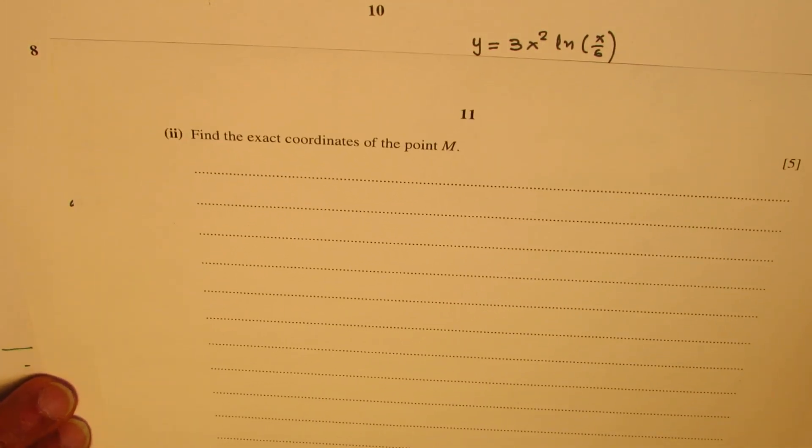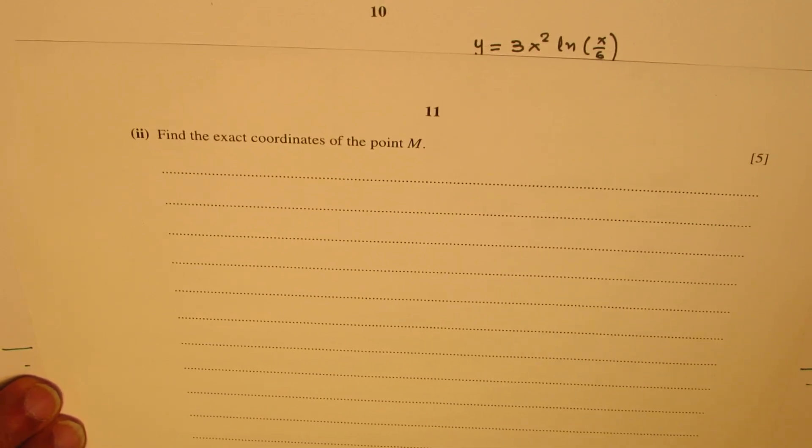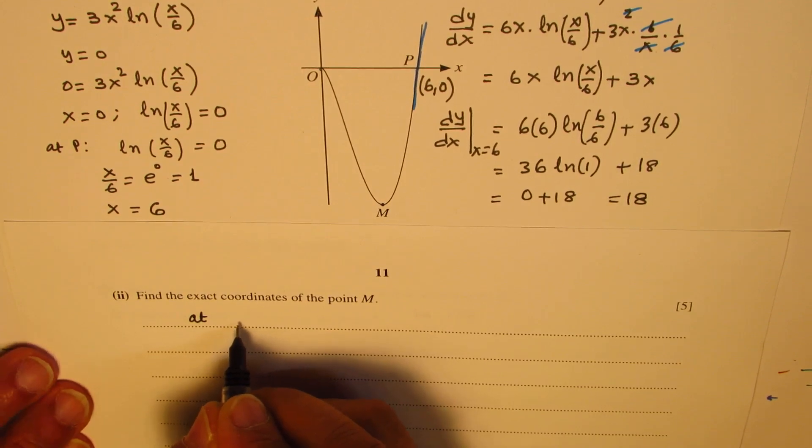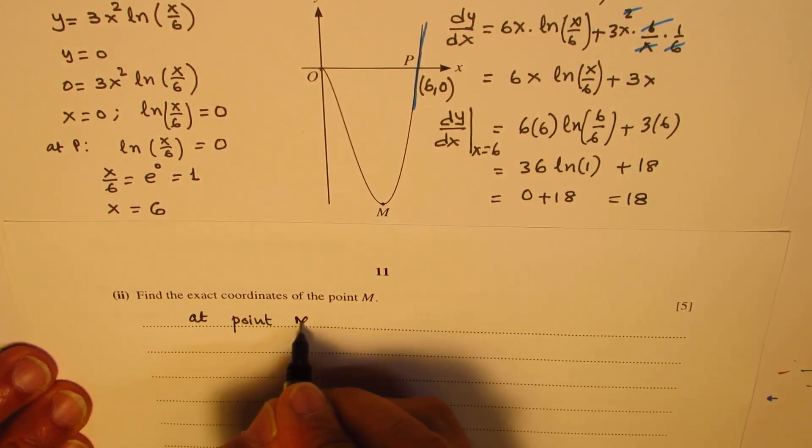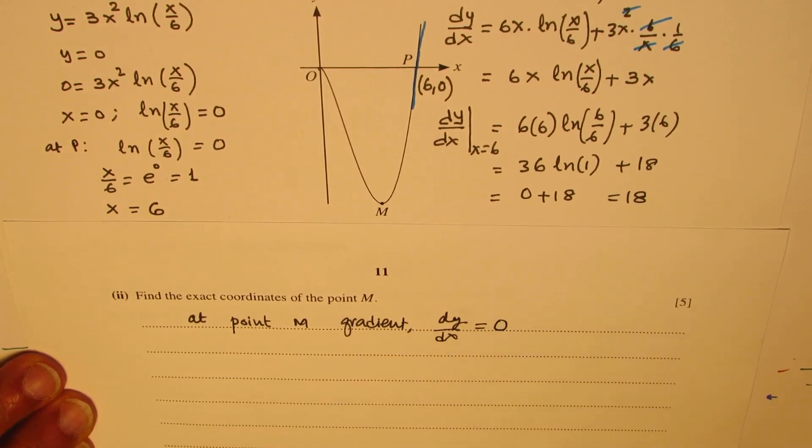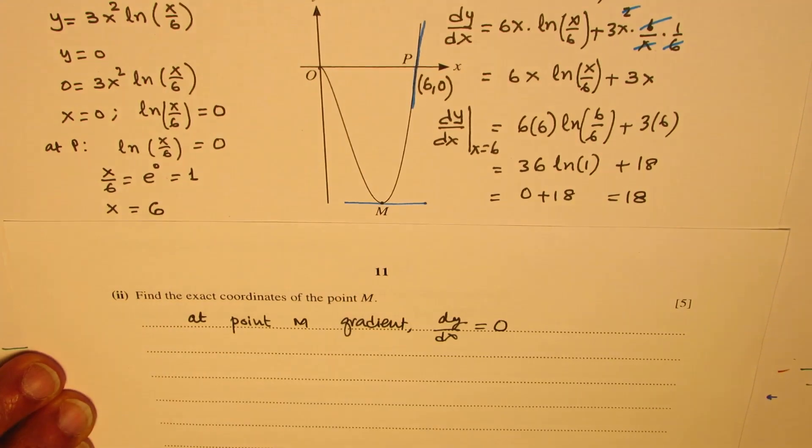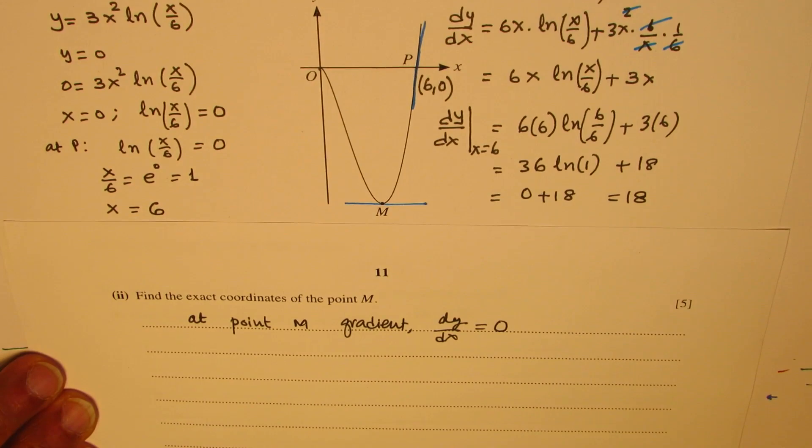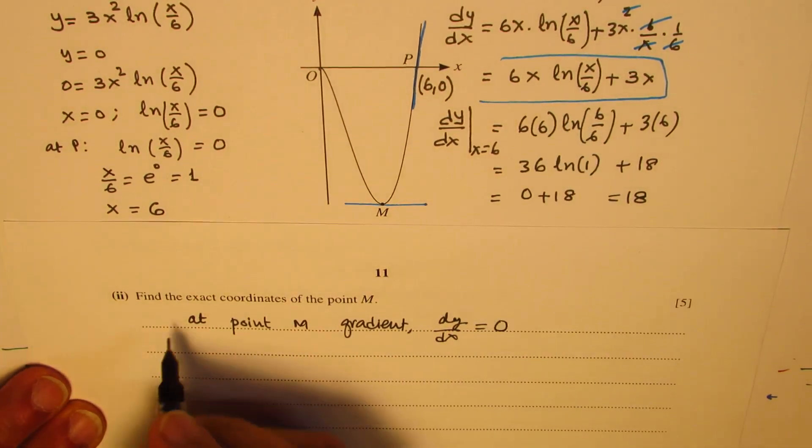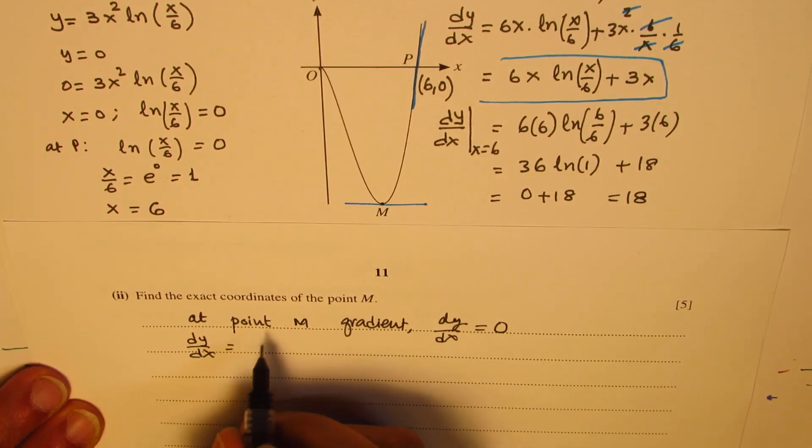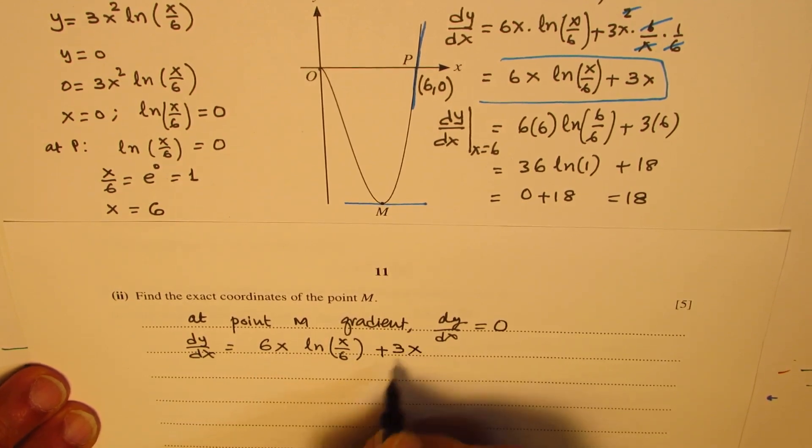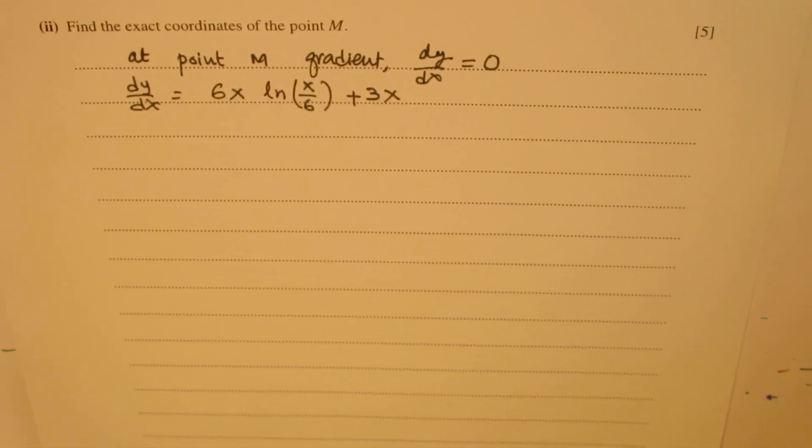Now let's move on and find solution to part B. In part B, we need to find the exact coordinate of point M. So what we see here is that at point M, gradient dy/dx will be equal to 0, because your tangent line is horizontal. And what we found, an expression for dy/dx is 6x ln(x/6) plus 3x. So from here, we'll continue and provide the solution.